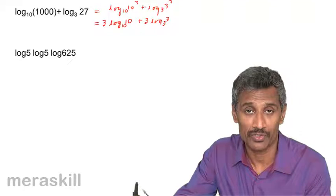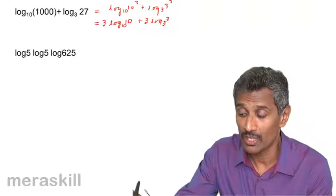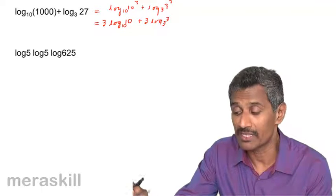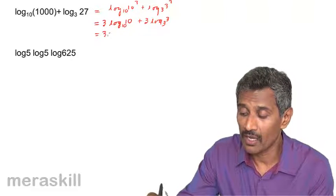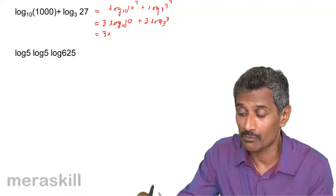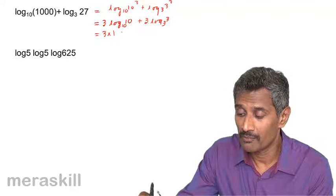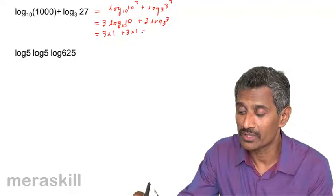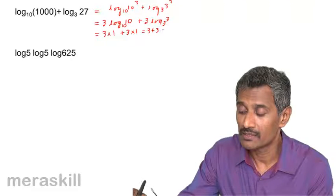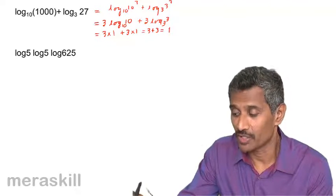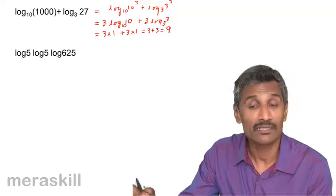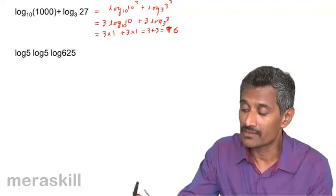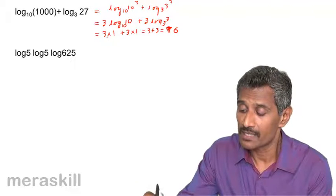Now we use the rule: log of any number to the same base is 1. So this is 3 times 1 plus 3 times 1, which is 3 plus 3 equals 6. Hence we get the value as 6.